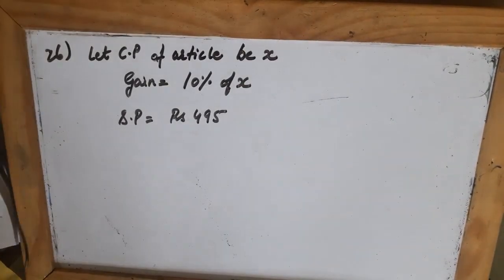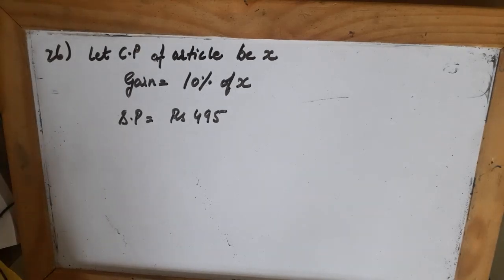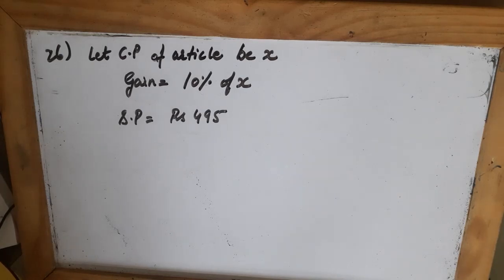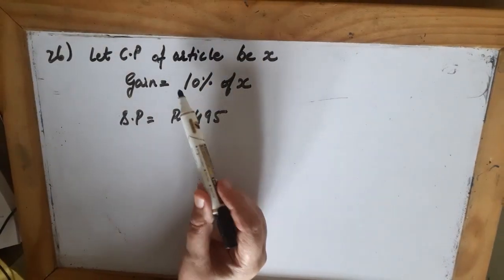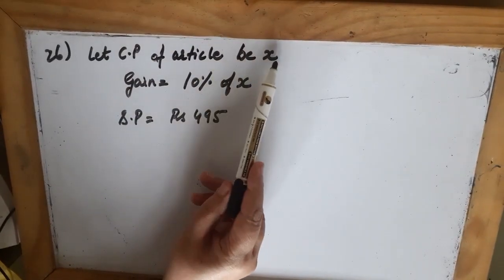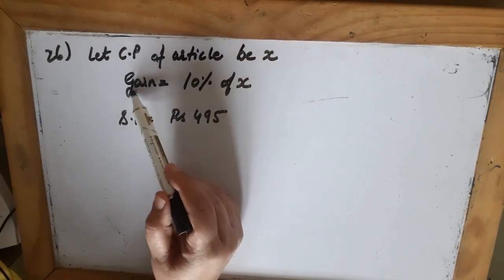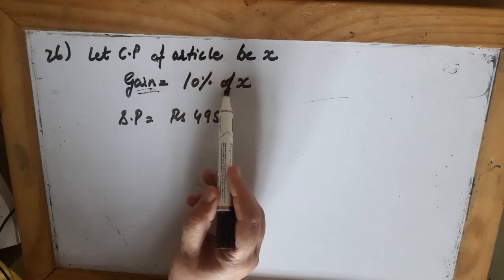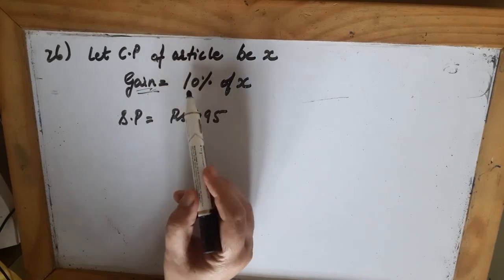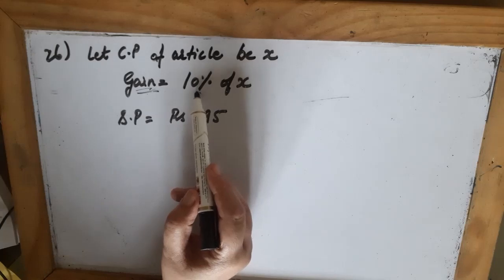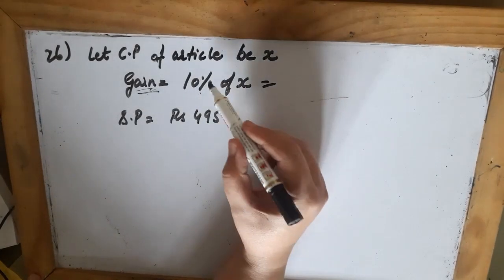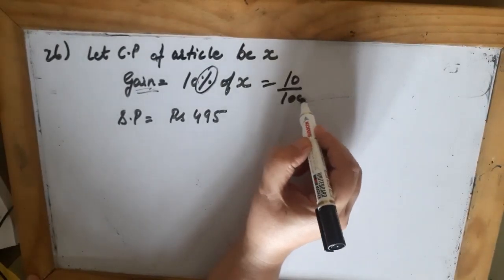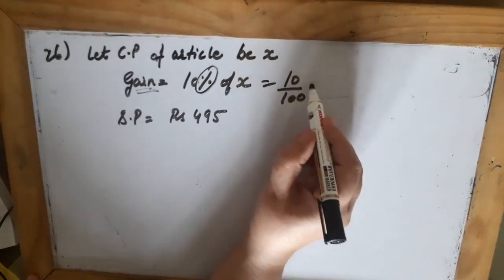Question number 26: a man sold an article for Rs. 495 and gained 10% on it. Find the cost price. The man sold it for Rs. 495 and gained 10%. We have to find the CP. Let CP of the article be x. Gain is 10% of x. Remember, gain or loss is always calculated on CP.